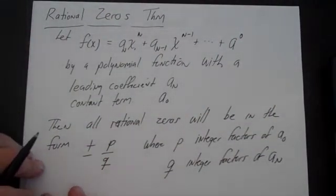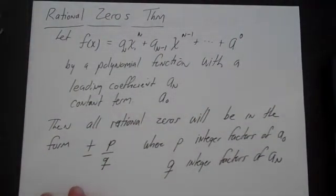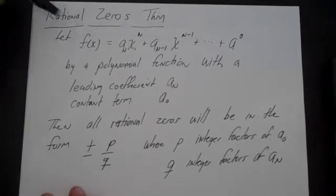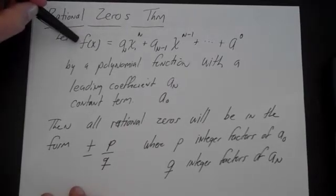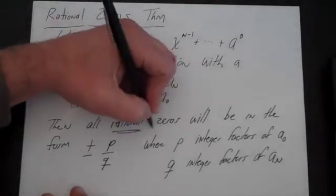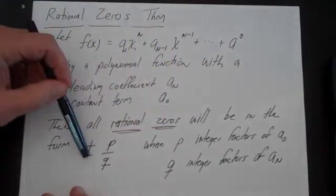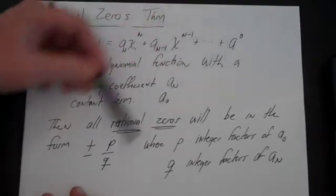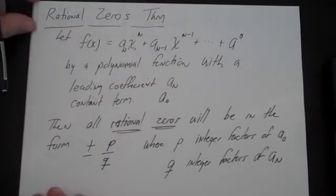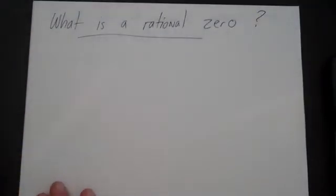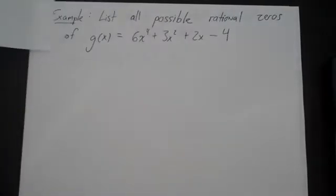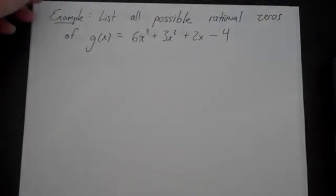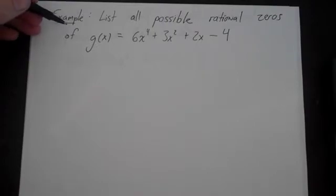That's actually a lot easier than it looks, so let's review it again. The rational zeros theorem says that given a polynomial function, all rational zeros will be of the form plus or minus P over Q, where P is the integer factors of the constant term and Q is the integer factors of the leading coefficient. Let's look at an example: list all possible rational zeros of g(x) = 6x⁴ + 3x² + 2x - 4.